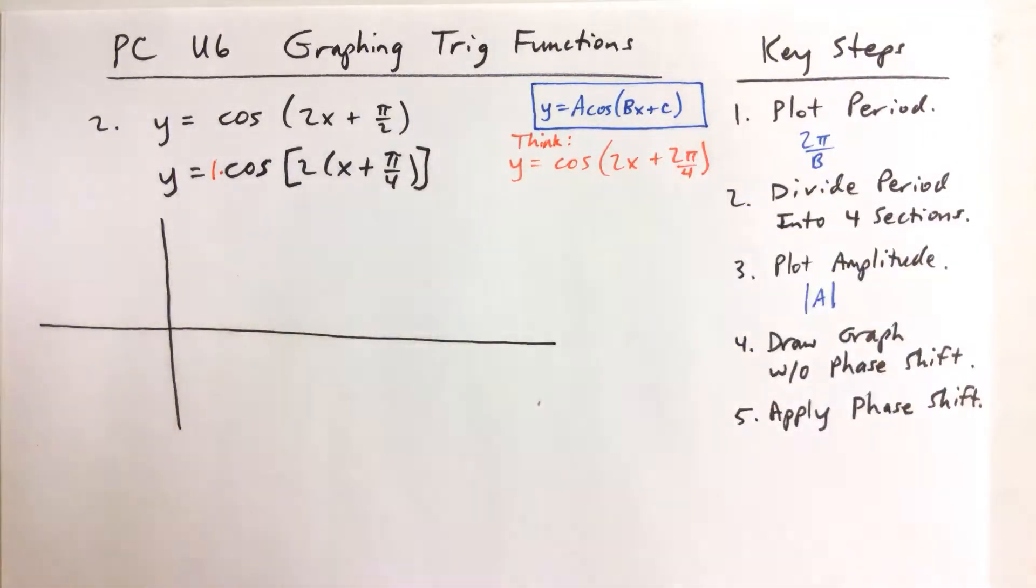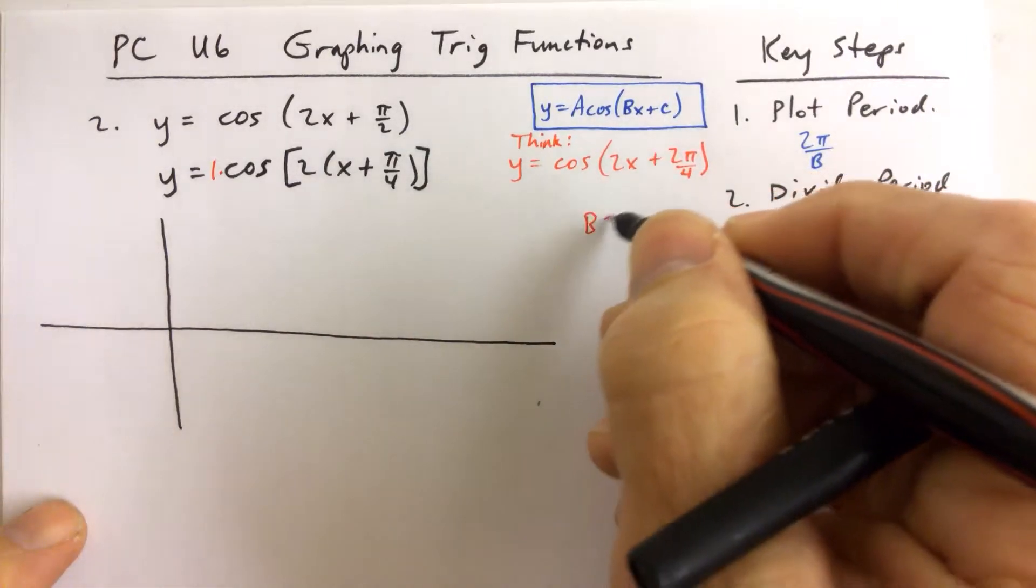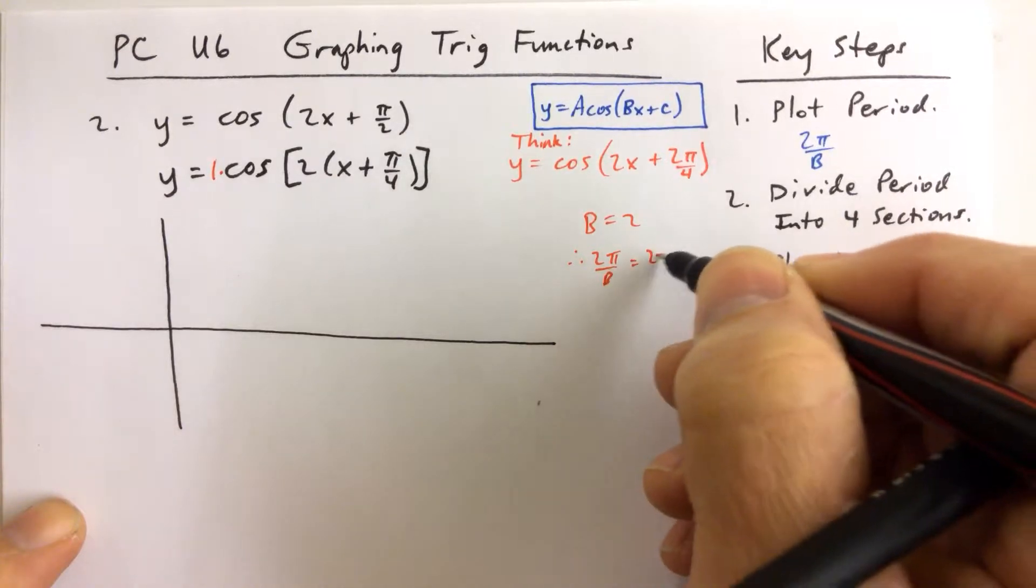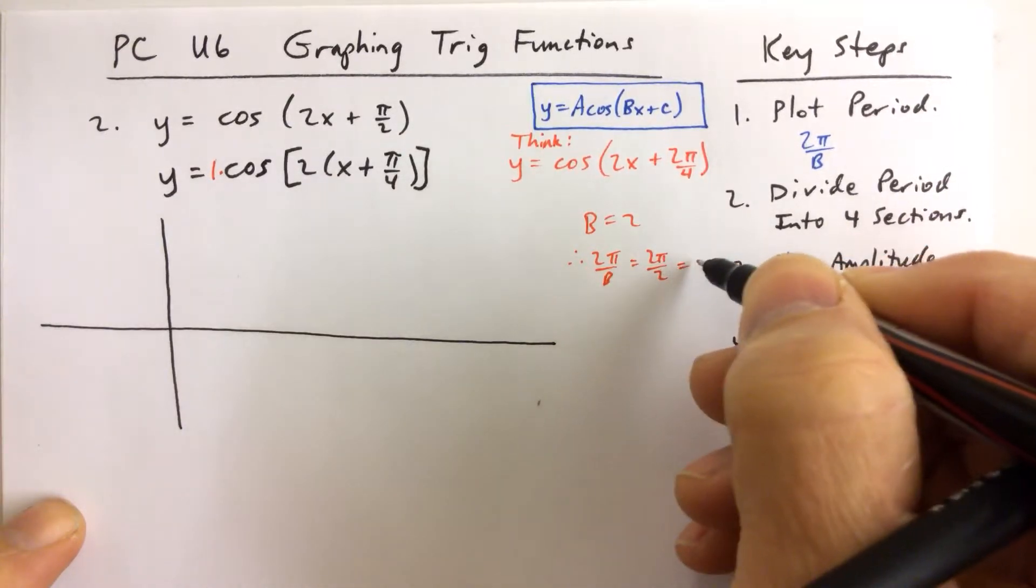And plotting the period, I know that 2 pi over b, like I said, b is equal to 2, so therefore 2 pi over b is 2 pi over 2, which is pi.